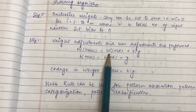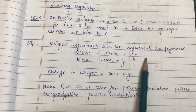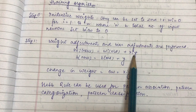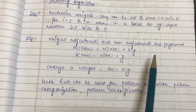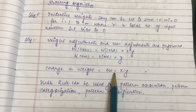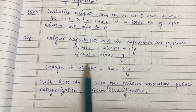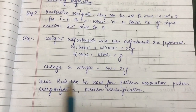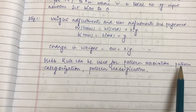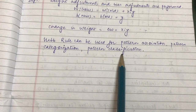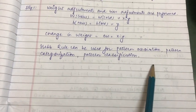The weight update formula is: wi_new = wi_old + xi * y, where x is the input vector and y is the target output. The change in weight equals xi * y, and the change in bias equals y. Hebb rule is mainly used for pattern association, pattern categorization, and pattern classification.